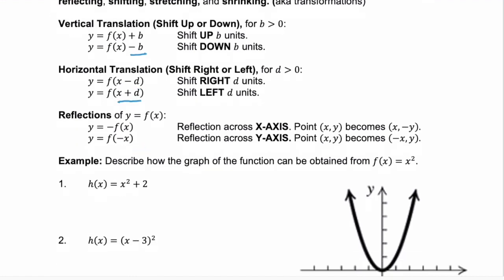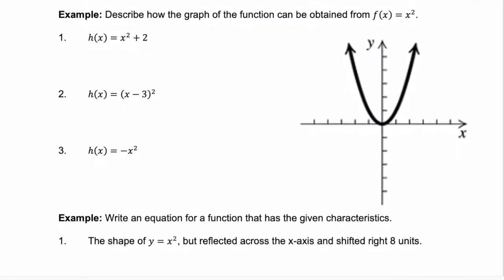Let's look at some examples. Here we have our mother function x squared, graphed on the right. We're going to talk about the transformations on the left and show roughly what they look like. The first one: x squared plus 2. We're taking our mother function and adding 2. The 2 is on the outside, so we're going to go up 2 units — a vertical shift. Take that vertex and move it up 2 units to get the new function.